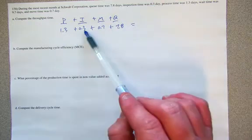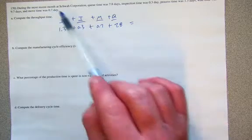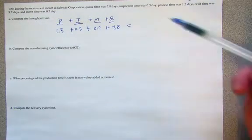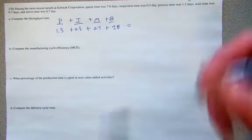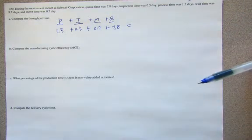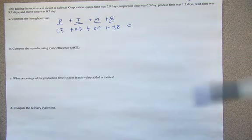plus your inspection time, 0.3 of an hour, moving time, 0.7, I guess this is days not hours, and then your queue time is 7.8 days. So, just the length of time that these products spend as they are going through the manufacturing cycle.